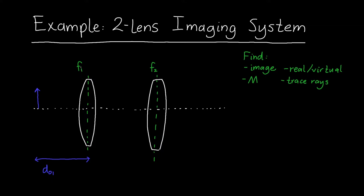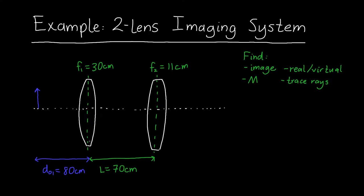In this system we've got two converging lenses. The first focal length is 30 centimeters, and the second focal length is 11 centimeters. The distance to our object is initially 80 centimeters. The distance L between the two lenses is 70 centimeters. Both lenses have positive focal lengths and are converging — I've drawn them as convex.